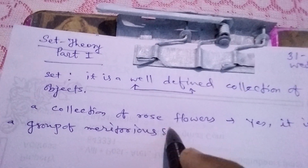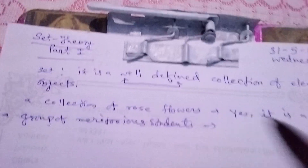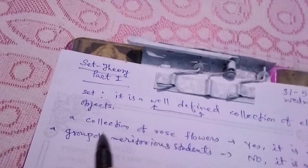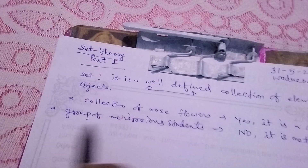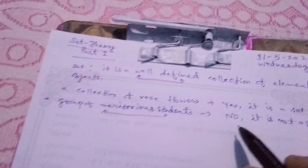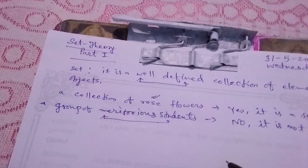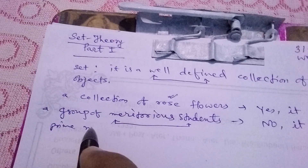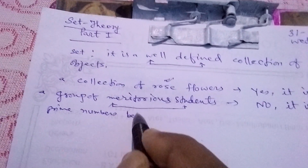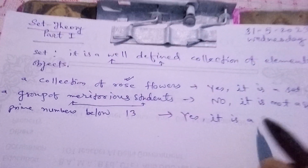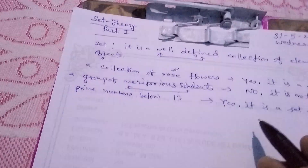But if I say a group of meritorious students — no, it is not a set. Because 'well-defined' means we cannot define who is meritorious; there is no limit or clear definition. But rose flowers — yes, it is a set. Similarly, prime numbers below 13 — yes, it is a set.